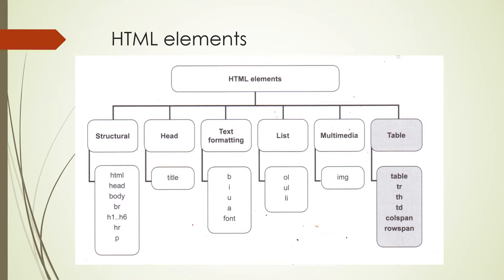You will remember BR for break and HR for horizontal rule. H1 to H6 are your various headings and P is for paragraph. In the head section, you will remember we used the title tag — you open it and close it, and what you write in between the two tags is what will appear in the tab in your browser.